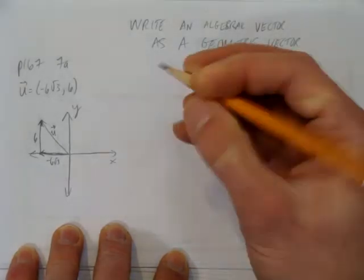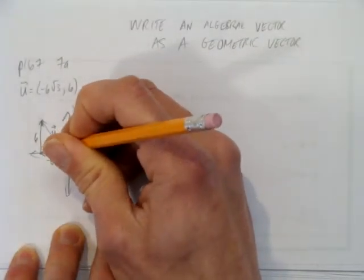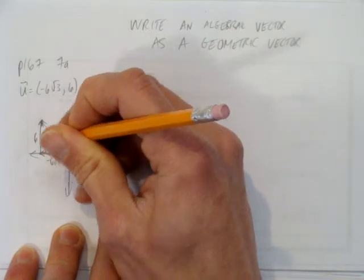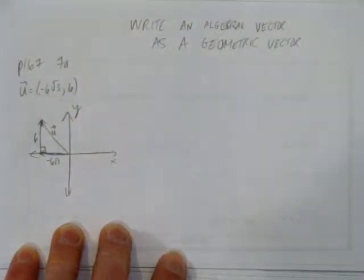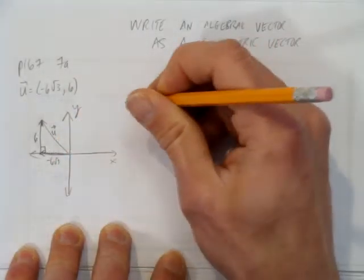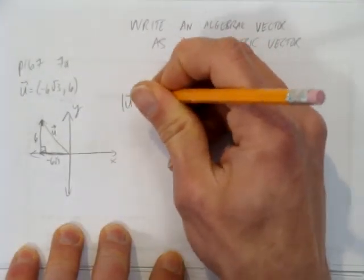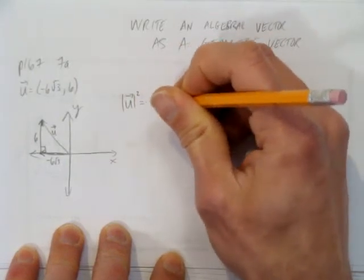So how do we write this as a geometric vector? Well, we recognize that this is a right angle triangle. These two components are 90 degrees to each other and they form the vector u. So since it's a right angle triangle, I can solve for the magnitude of u using Pythagorean theorem.